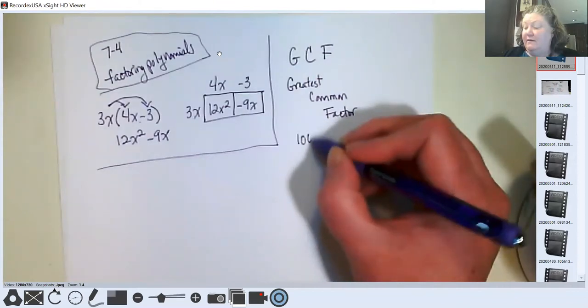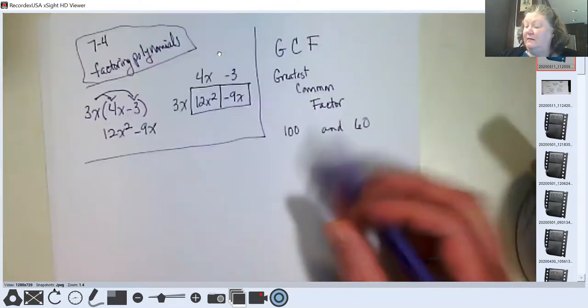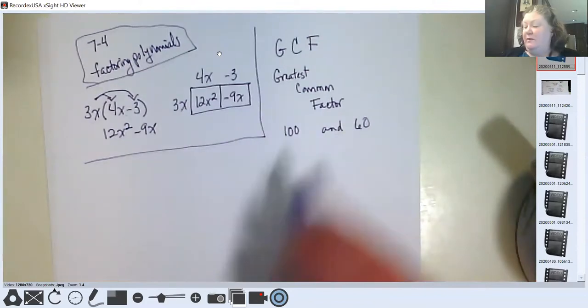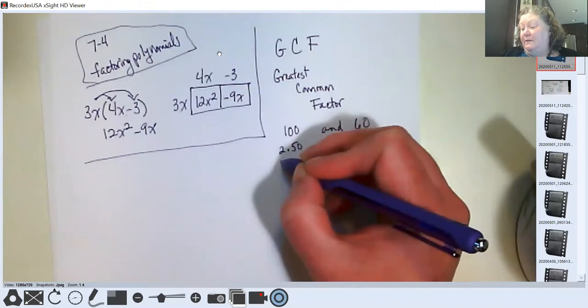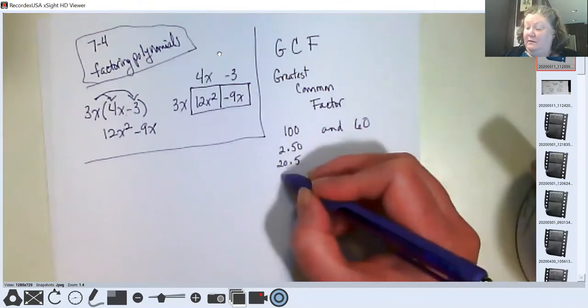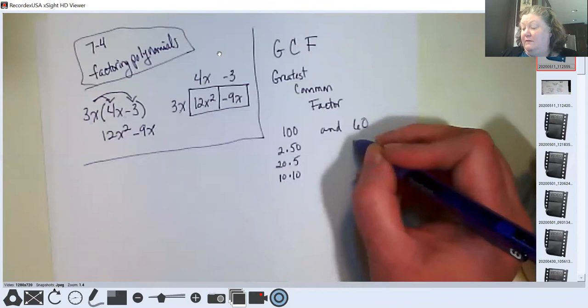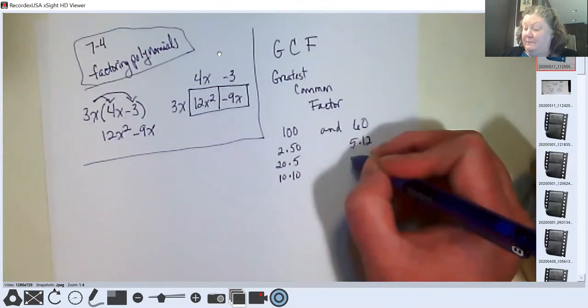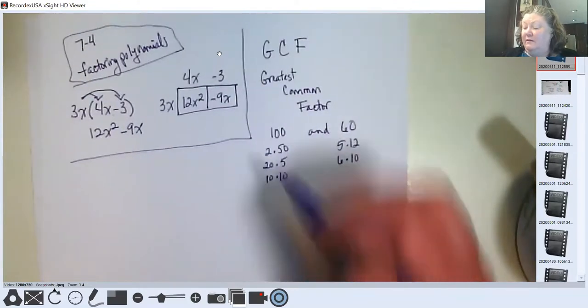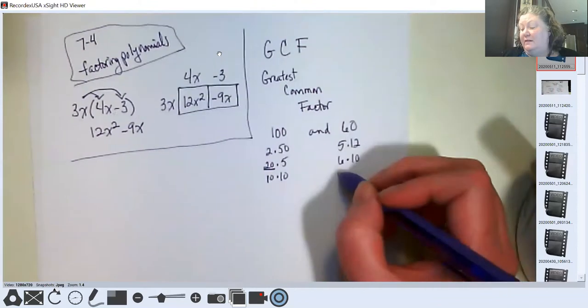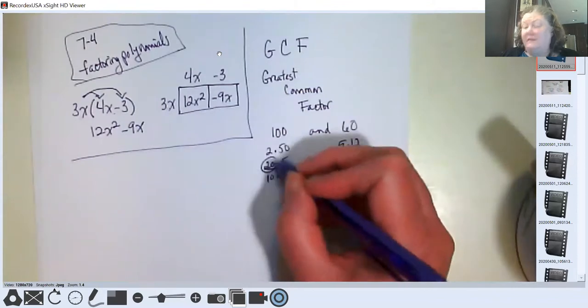So I want to start off first with a quick review of something. If we're talking about greatest common factor of numbers, let's say we're doing 100 and 60. We would start listing factors of 100 like we know 2 times 50, 20 times 5, 10 times 10. For 60 we could put 5 times 12, 6 times 10. There's a common factor right there. But I also see this 20 over here and I know that 60 can be 20 times 3. So in this case, 20 is the greatest common factor.